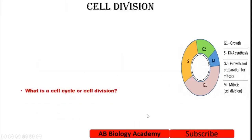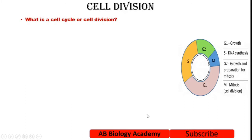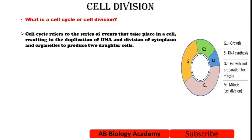So, what is a cell cycle? The cell cycle refers to the series of events that take place in a cell, resulting in the duplication of DNA and division of cytoplasm and organelles to produce two daughter cells.